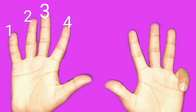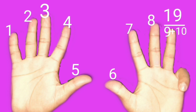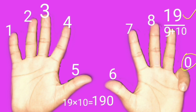Nine fingers are on the left side of the bent finger. Nine's next number is 10. Nine plus 10 is 19. No finger is on the right side of the bent finger — that means 0. Left side 19 is there, right side 0 is there. So 19 times 10 is 190.